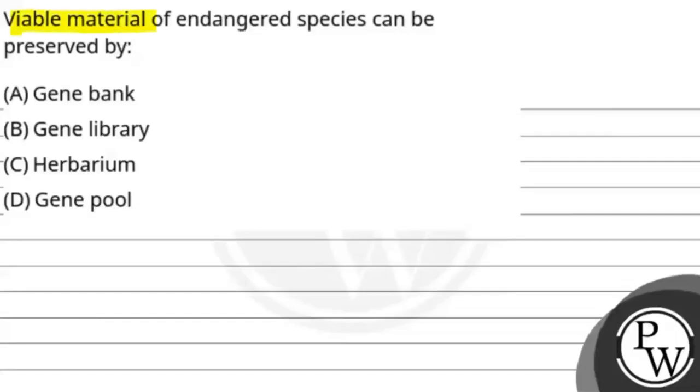Hello, let's read the question. The question says that viable material of endangered species can be preserved by, and the options are A gene bank, B is gene library, option C is herbarium, option D is gene pool.